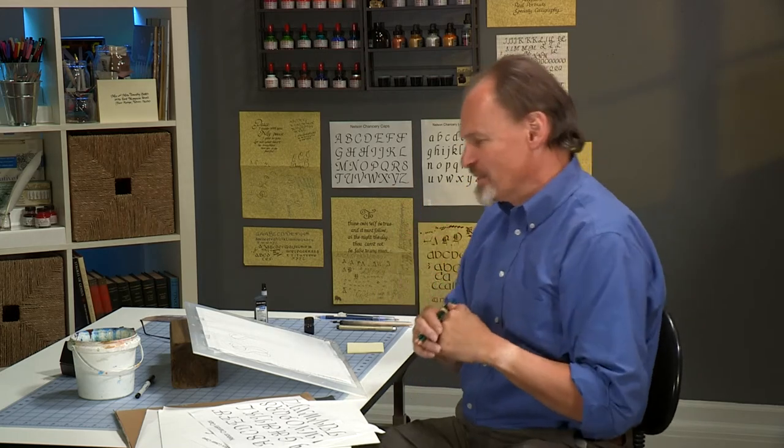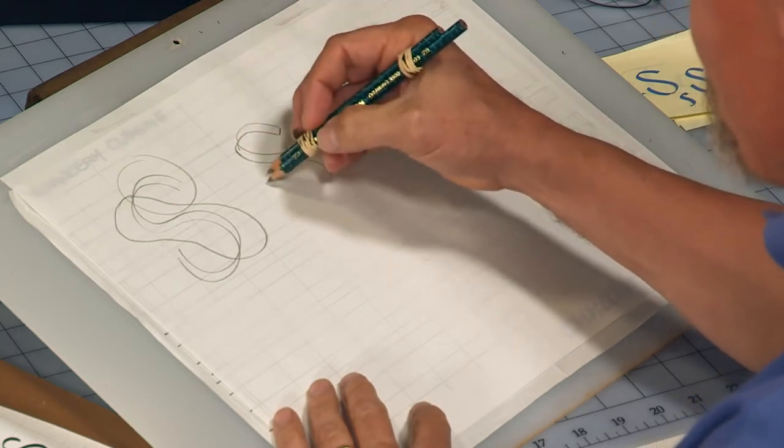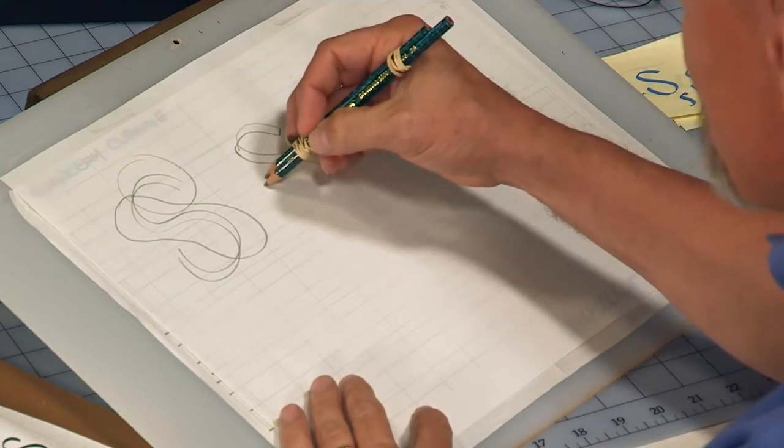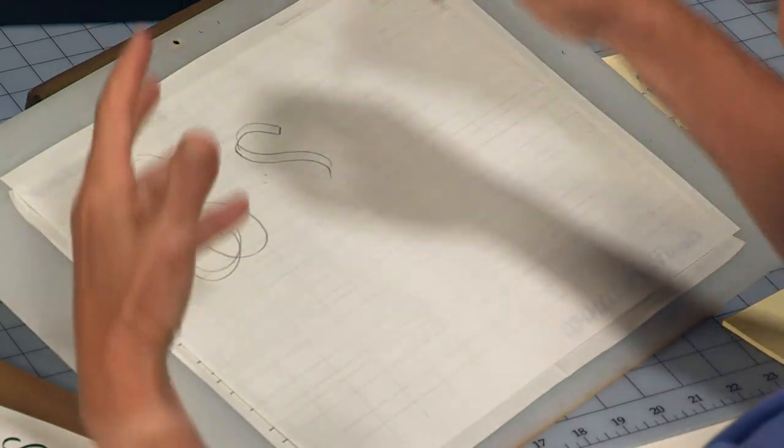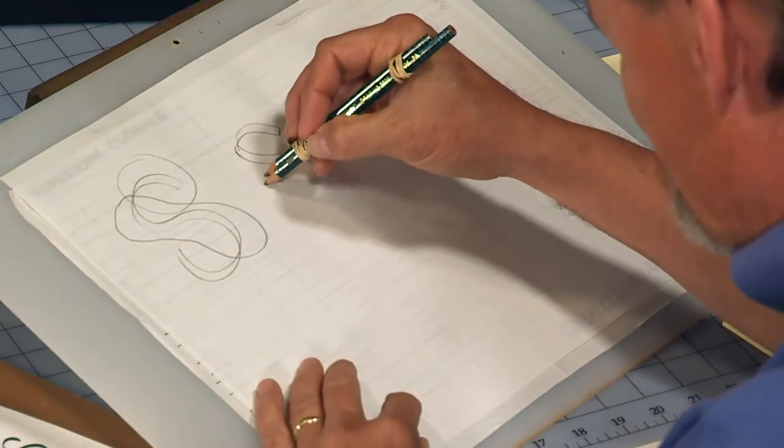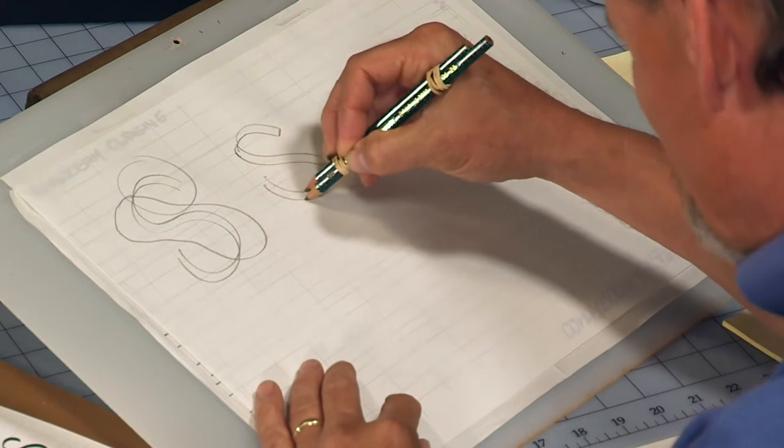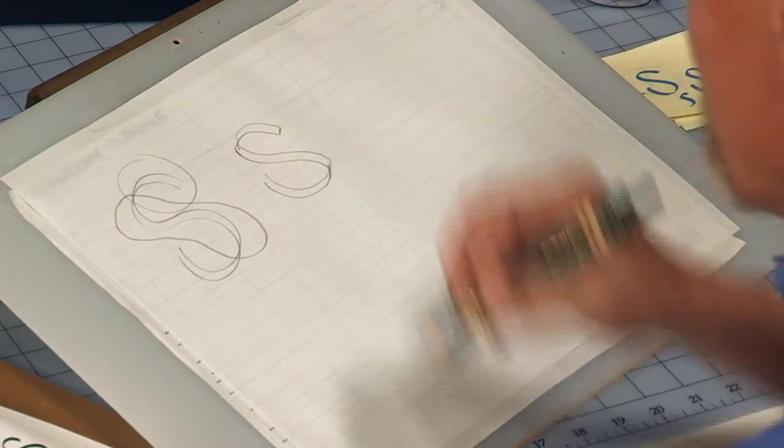We don't want the top of it to be the same as the bottom. So I don't want to do a curve just like this. Typically what I will do is just try to make sure that that bottom curve is just a little bit more bulbous, a little bit more curvy than the top, but only a little bit more. And that's not a bad chancery cursive s.